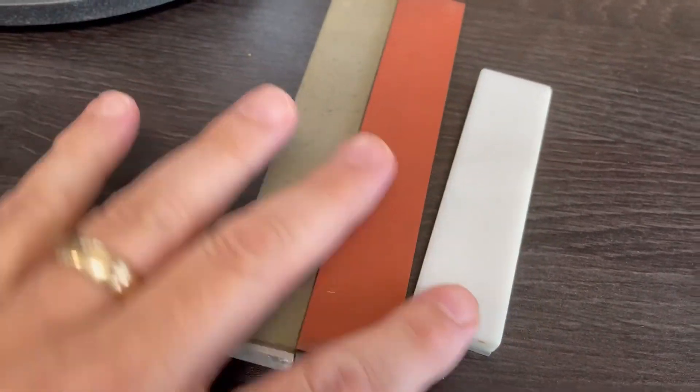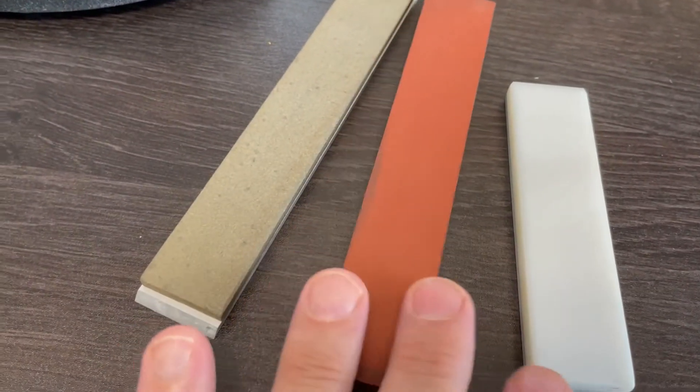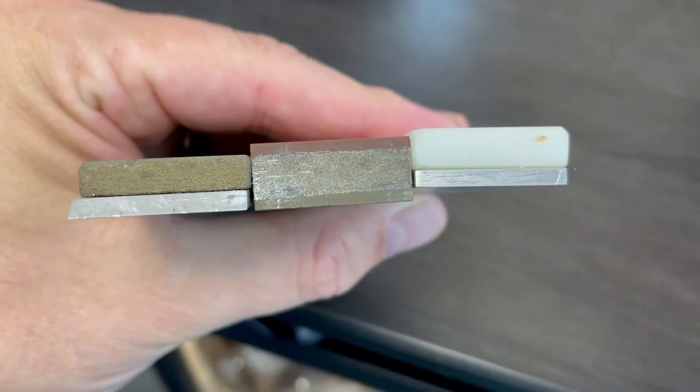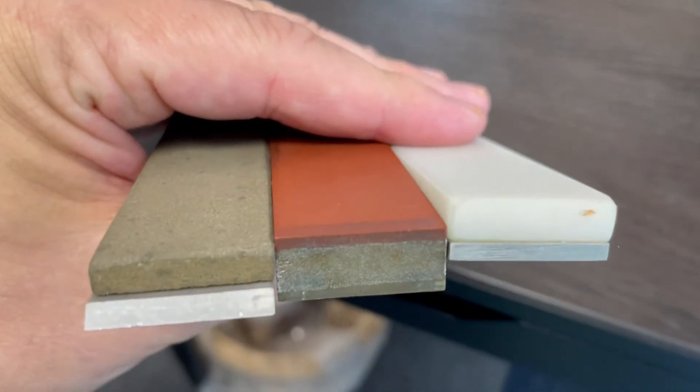Sharpening stones come in a variety of sizes and thickness. How can you maintain a consistent sharpening angle with thickness variations among your abrasives?